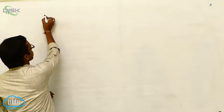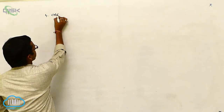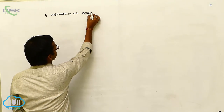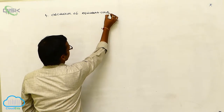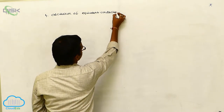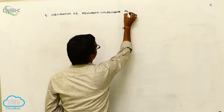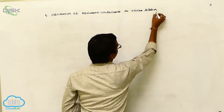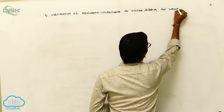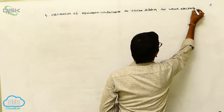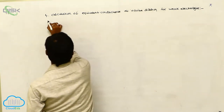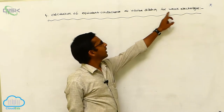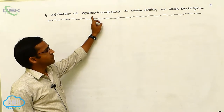Kohlrausch's law — in that, the first application is the calculation of equivalent conductance at infinite dilution for weak electrolytes. This is the first application of Kohlrausch's law. For weak electrolytes, the conductance property calculation is very difficult.